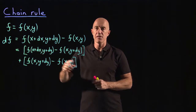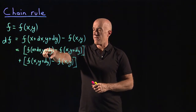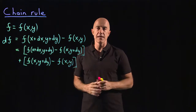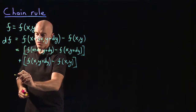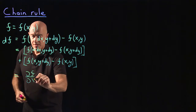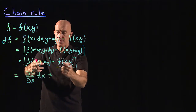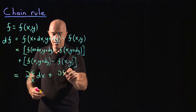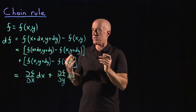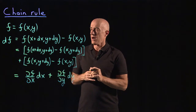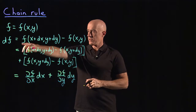We're considering dx and dy to be small quantities called infinitesimals — as small as we would like them to be. So evaluating at y plus dy is the same thing as evaluating at y. Then f of x plus dx minus f of x is just the partial derivative of f with respect to x times dx. Similarly, the second term is the partial derivative of f with respect to y times dy. So df equals (∂f/∂x)dx plus (∂f/∂y)dy.